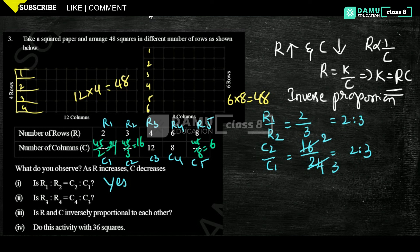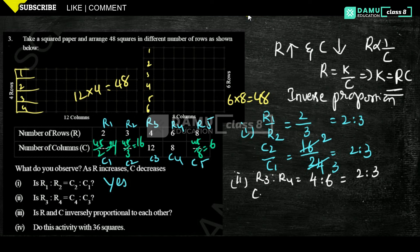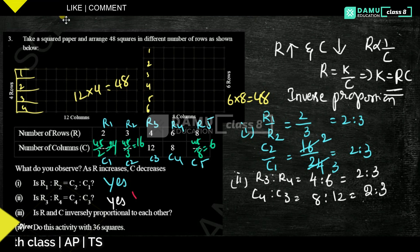Next: R3 is to R4, that is 4 is to 6, which simplifies to 2:3. Then C4 is to C3: C4 is 8 and C3 is 12, so 8:12 simplifies to 2:3. Both are equal. Is R inversely proportional to C? Yes, obviously it is inversely proportional. If R is increasing then C is decreasing.